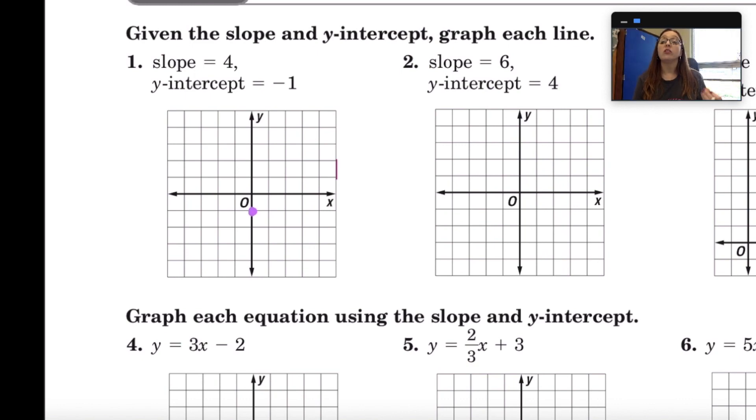Now remember we said that the slope is like a set of directions. Generally, a lot of times we have them written as fractions. We're going to rewrite our slope of four as an improper fraction. So remember that if you have a whole number or an integer and you want to rewrite it as a fraction, all you have to do is put a one under it. Remember that four is equivalent to four over one.